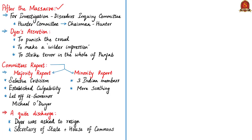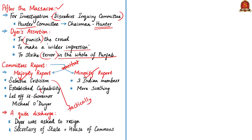After the massacre, an investigation committee was set up—the Disorders Inquiry Committee, also known as the Hunter Committee after its chairman. In his testimony, Dyer asserted that his intention had been to punish the crowd, make a wide impression, and strike terror not only in Amritsar but throughout Punjab. The committee split along racial lines, submitting majority and minority reports. The majority report established Dyer's culpability but the lieutenant governor Michael O'Dwyer was made to walk free. The minority report, written by three Indian members, was more scathing in its criticism. Dyer was eventually asked to resign his command from India.